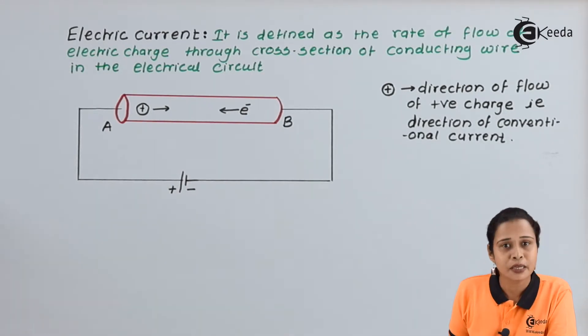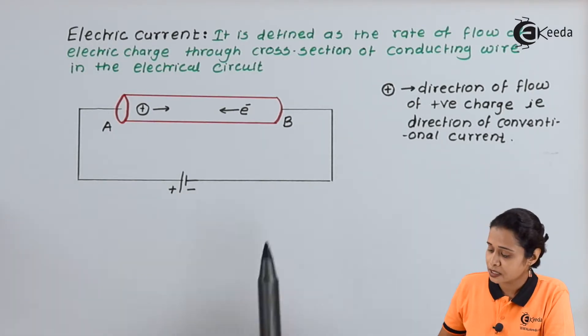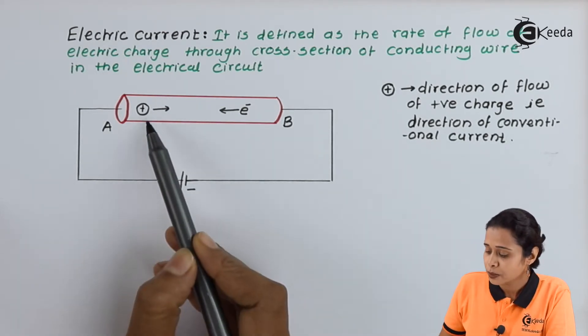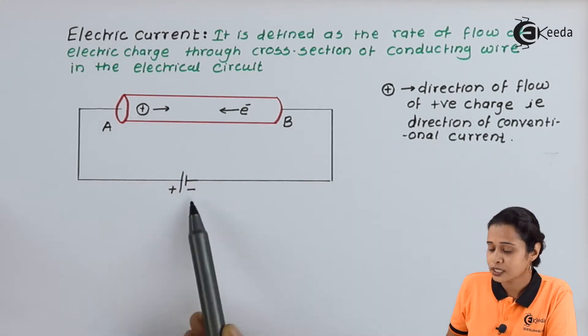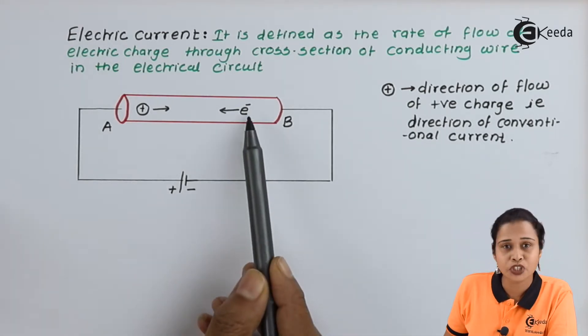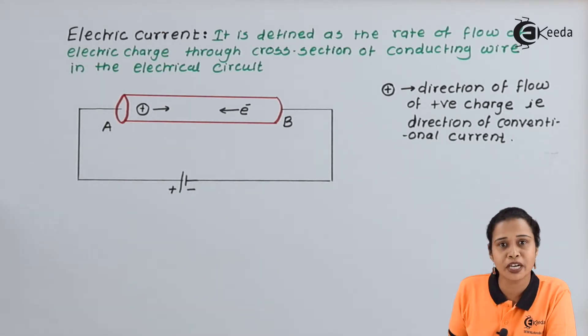Now, suppose in the conductor, we have positive and negative charges. So we will consider positive and negative both. The positive charge will move towards the negative terminal of battery. And negative charge, that is electrons, will move towards the positive terminal of battery.